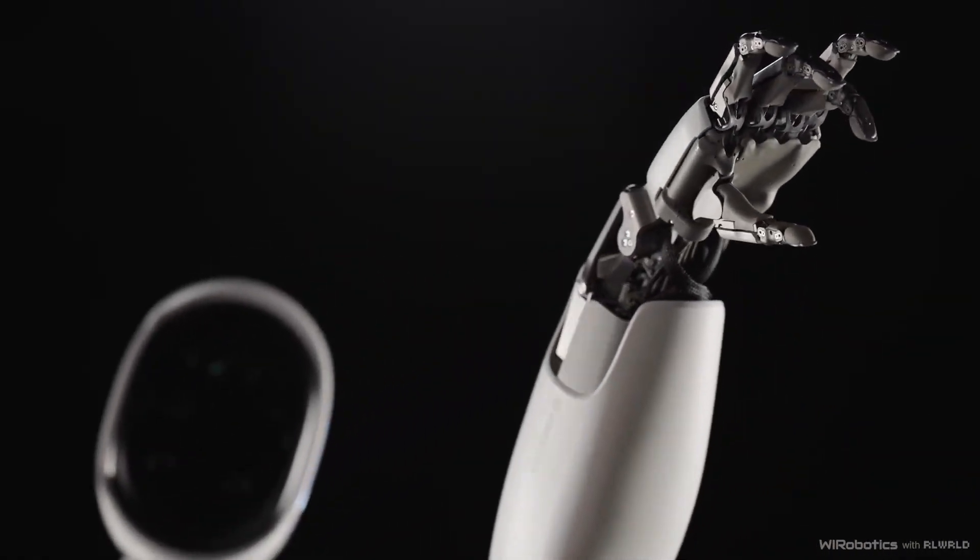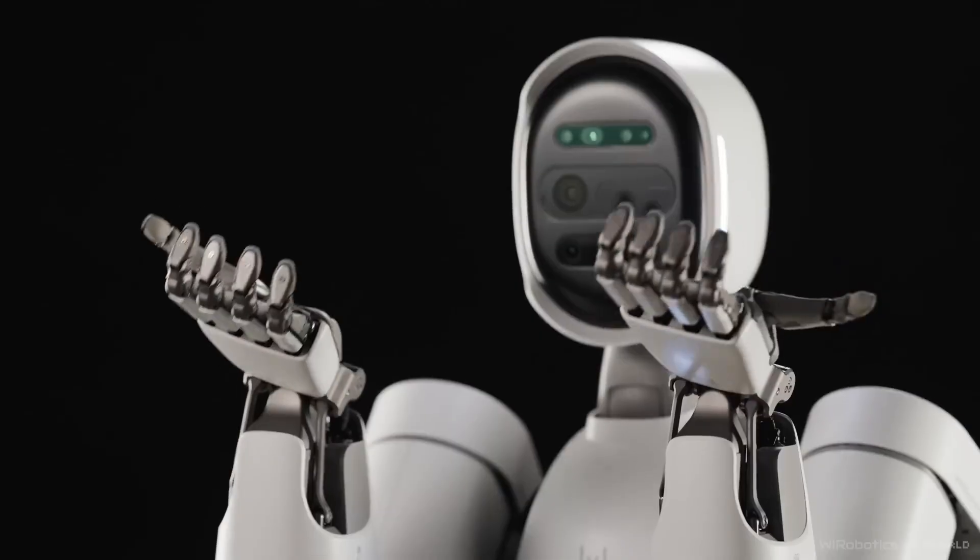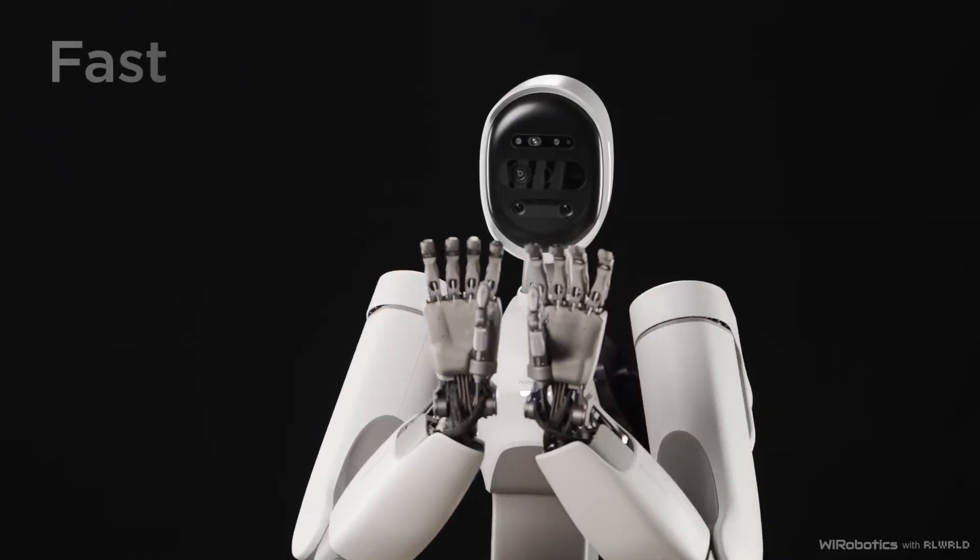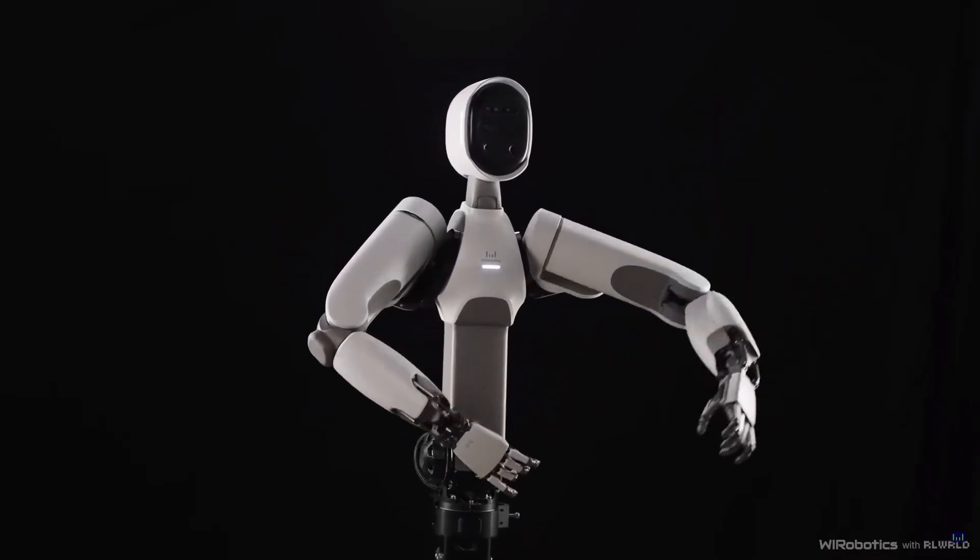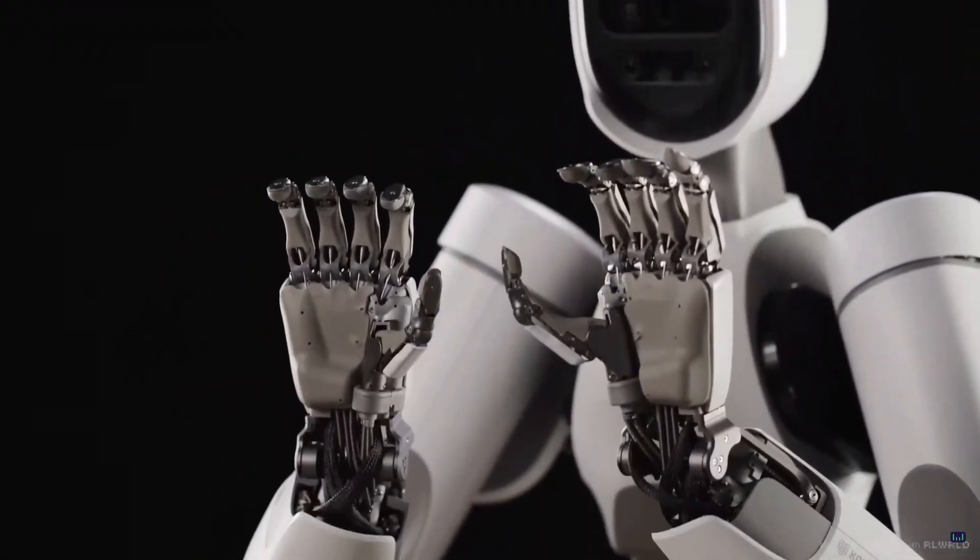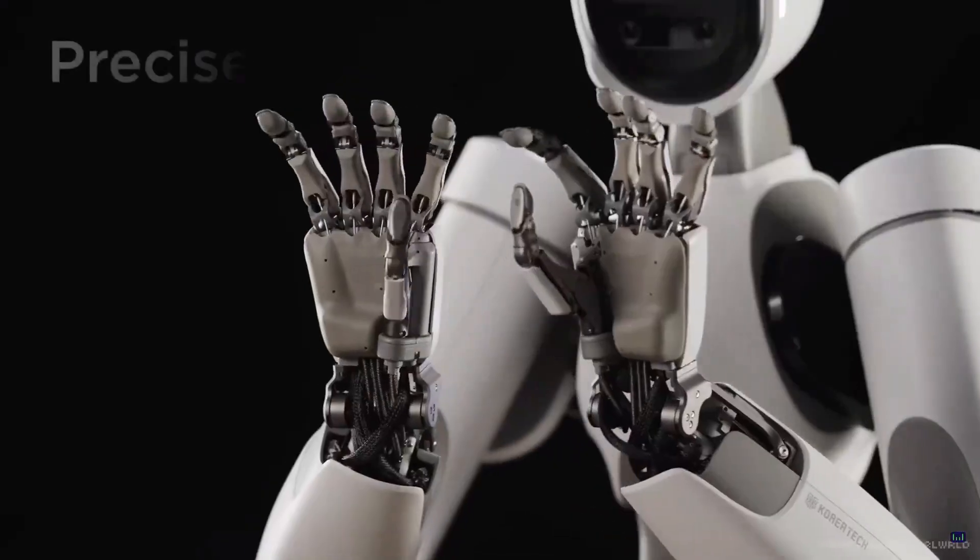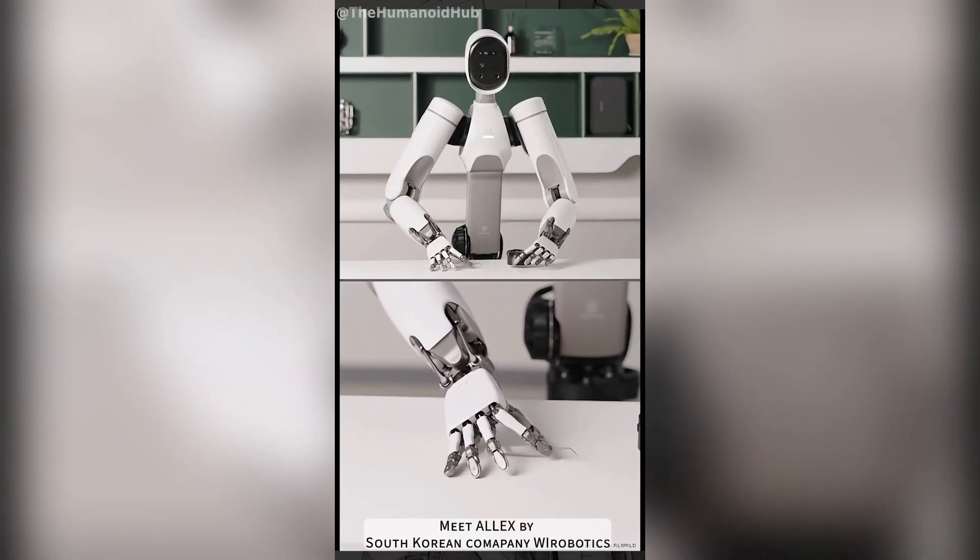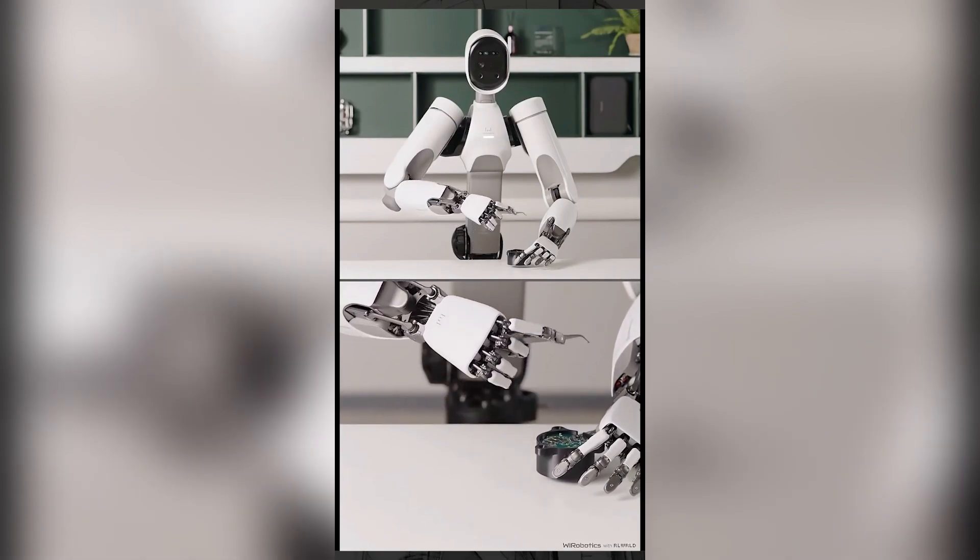But here's where things get really interesting. Alex isn't just about dexterity. WI Robotics has been developing advanced AI integration to pair with this hardware. The robot isn't simply following pre-programmed scripts. It's learning, adapting, and refining its movements through machine learning. That means every task it performs makes it smarter, more efficient, and more capable over time. So the more Alex is used in different environments, the better it will become at understanding context, predicting human needs, and executing tasks without constant human input. That opens the door to something bigger. Humanoid robots that aren't just useful but almost indispensable. If Alex or robots like it can seamlessly blend precision, strength, and intelligence, they could become the first generation of machines that truly integrate into human spaces without feeling like awkward add-ons. They'd be teammates, assistants, and maybe even companions.